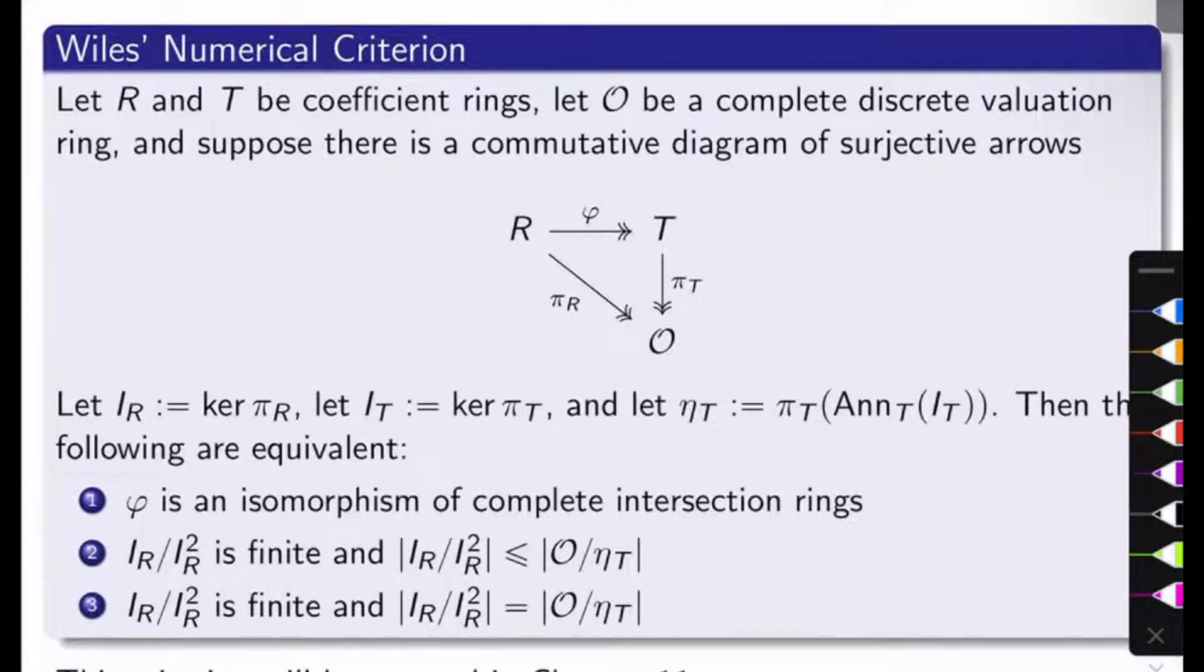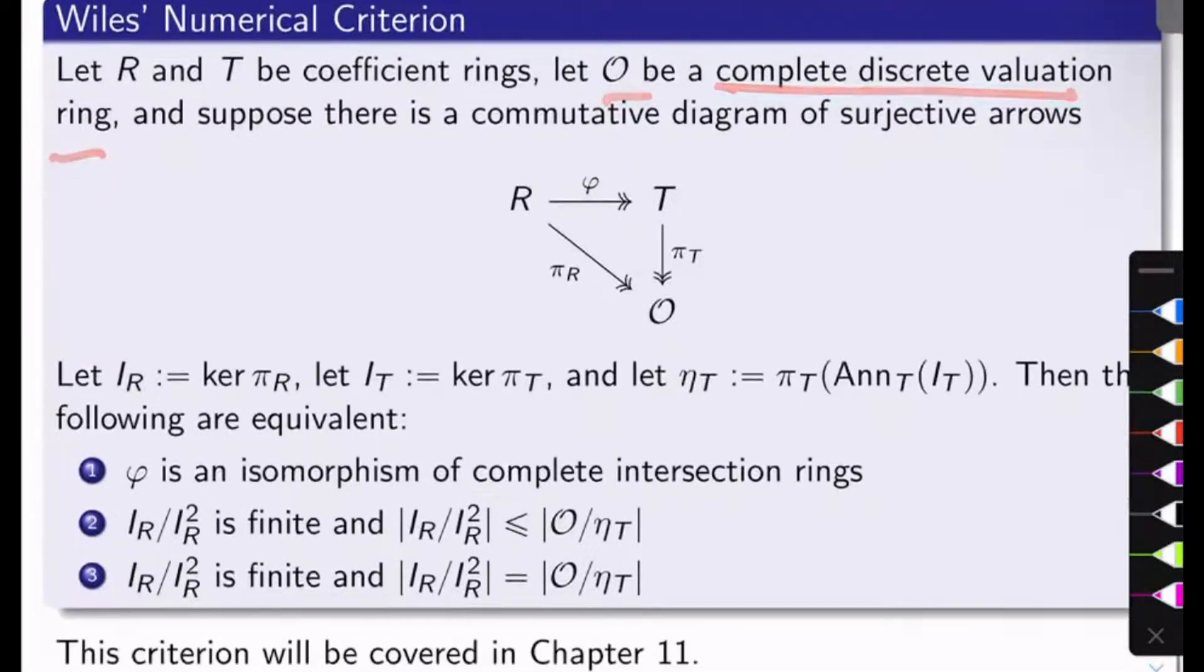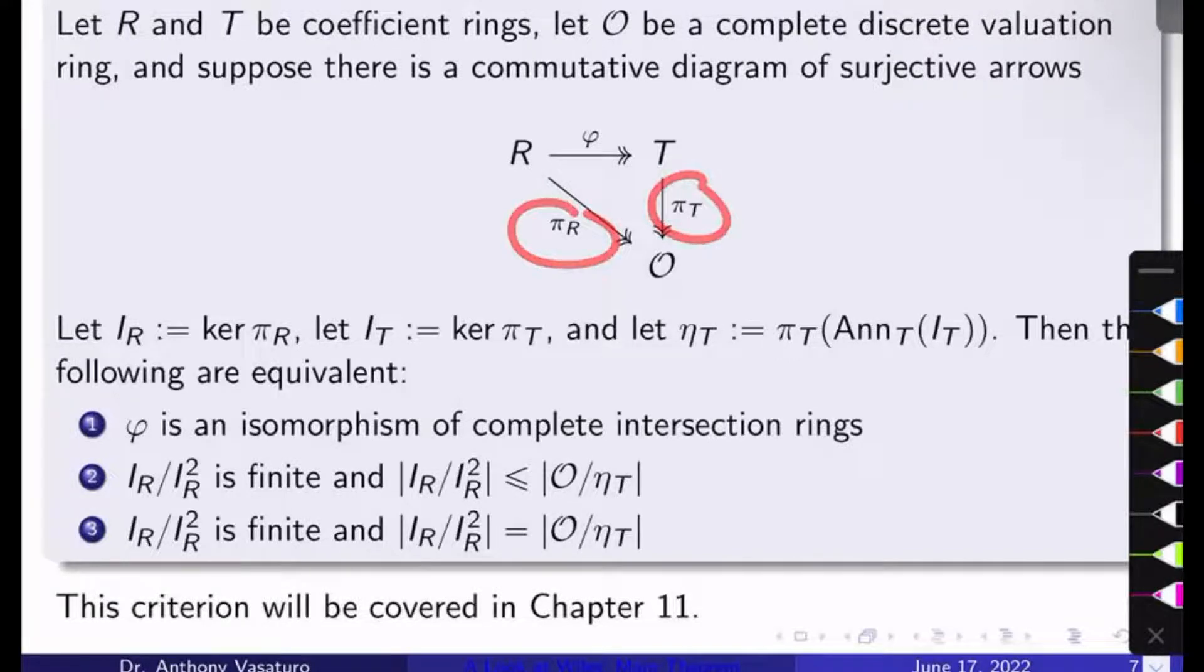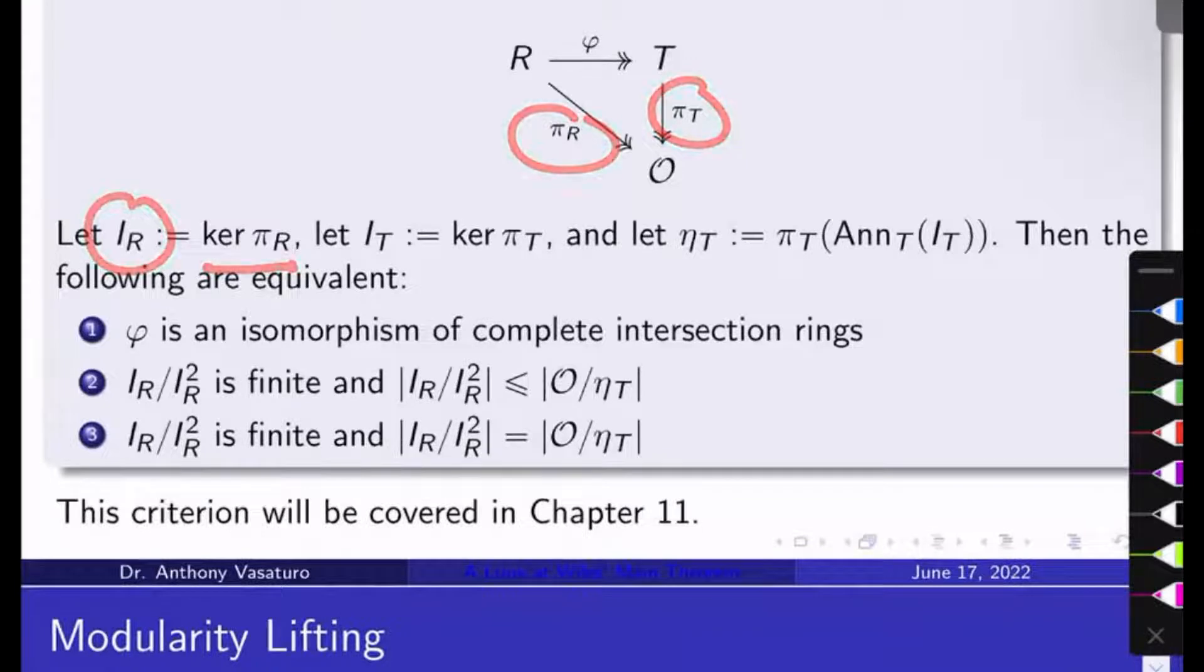Let R and T be coefficient rings—they're going to be our RD and TD above. Let O be a complete discrete valuation ring. Suppose we have a commutative diagram of surjective arrows: one from R to T, one from R to O, one from T to O. We'll call the new maps here pi_R and pi_T. Let IR be the kernel of pi_R, let IT be the kernel of pi_T. These are ideals in R and T. And we'll let eta_T be pi_T of the annihilator of the kernel of pi_T. So you've got the kernel in here, it's got an annihilator, and eta_T will be the image of that annihilator in O.